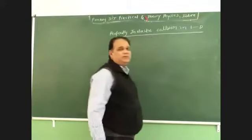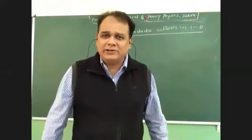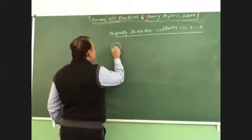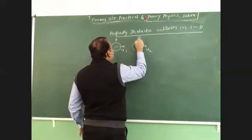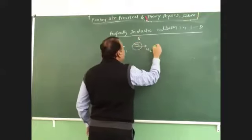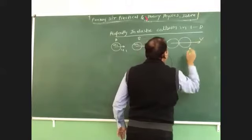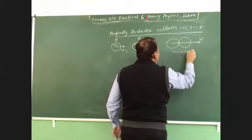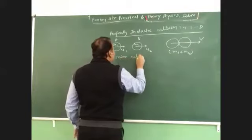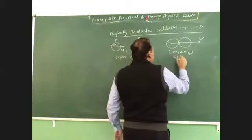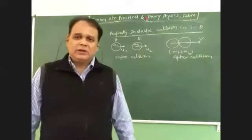So, perfectly inelastic collision. Perfectly inelastic collision, you know very well. After collision, the two bodies stick together and moves with a common velocity. So, this is first body, this is second body, A and B, M1, M2. And after collision... So, before collision, and after collision. My friends. I will tell you.